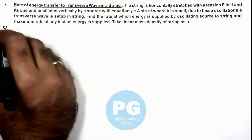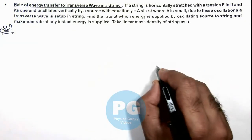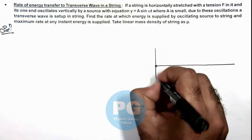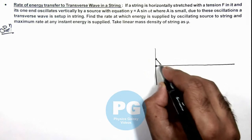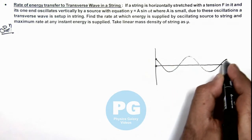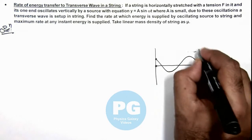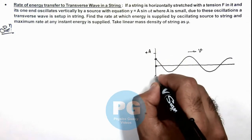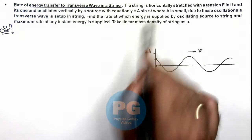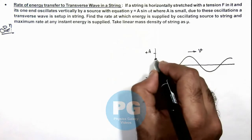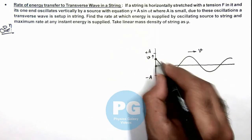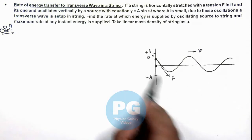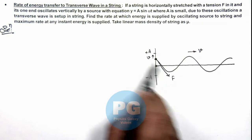In this situation, if we draw the picture of the string which is attached over the source and is oscillating vertically, then at any instant we can see the shape of the string. A transverse wave is set up in the string which travels at a speed v. The particle is oscillating up and down between +Ay and -Ay, with equation Ay·sin(ωt). At any instant it would be moving up with velocity vy, and the tension acts in the string in the tangential direction, which we consider as f. Due to the vertical component of f, energy is being extracted from the source to the string.